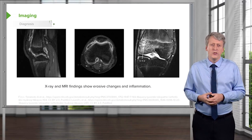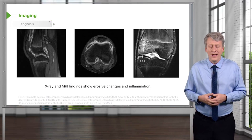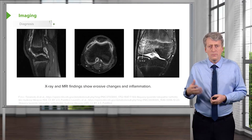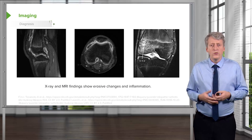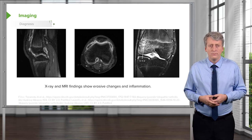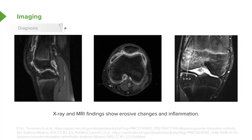If we were to image a joint — say we thought maybe it was an infected joint or something like that — what we'll see in that joint, especially on MRI, is erosive changes and inflammation. You can certainly see it on x-ray too as a later finding. Here we have an MRI of a child with JIA and you can see that knee is really taking a beating. There are areas of degradation and erosion in the knee joint that are going to cause this child problems.